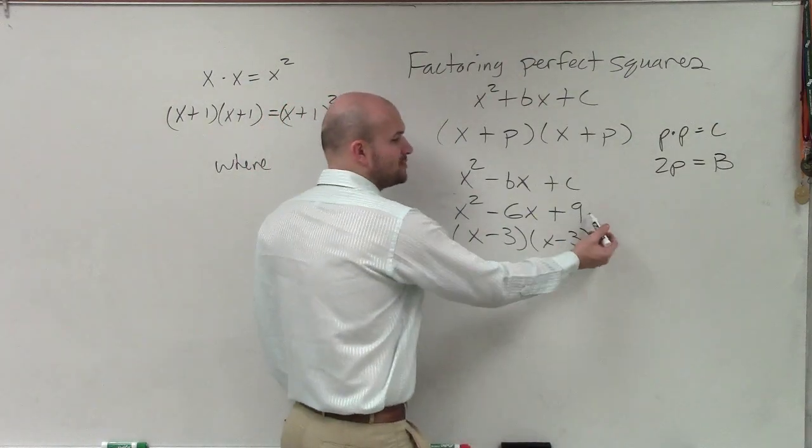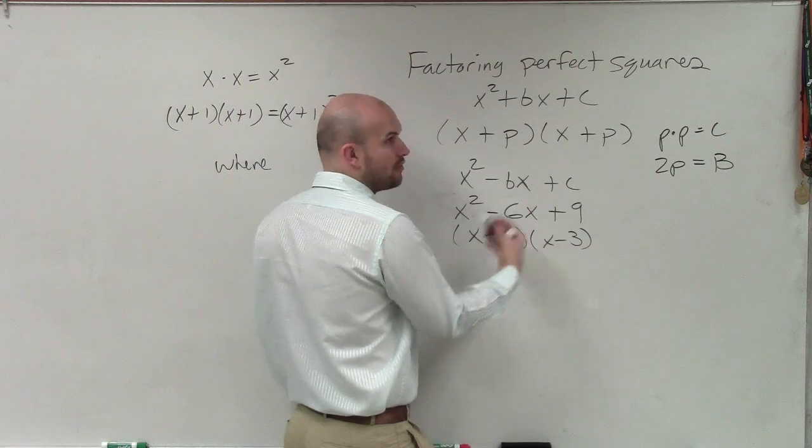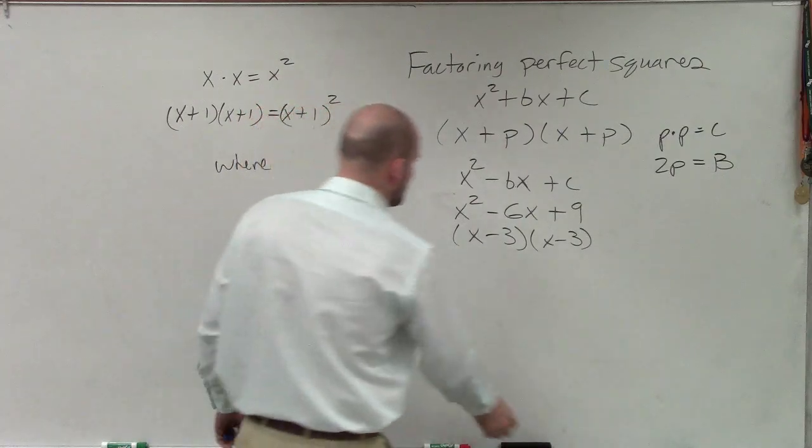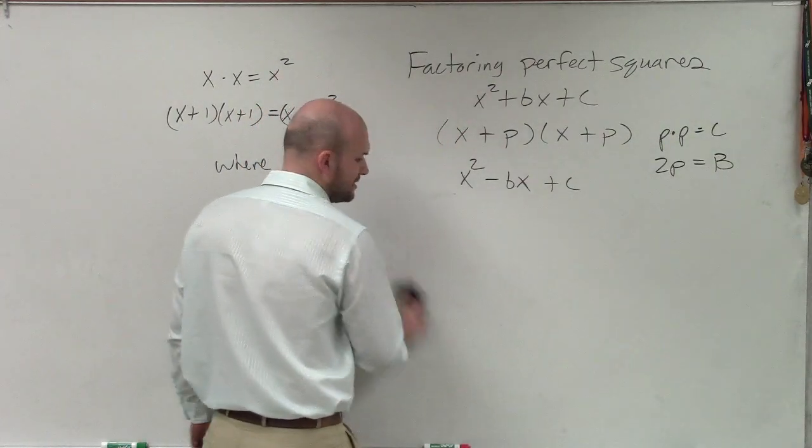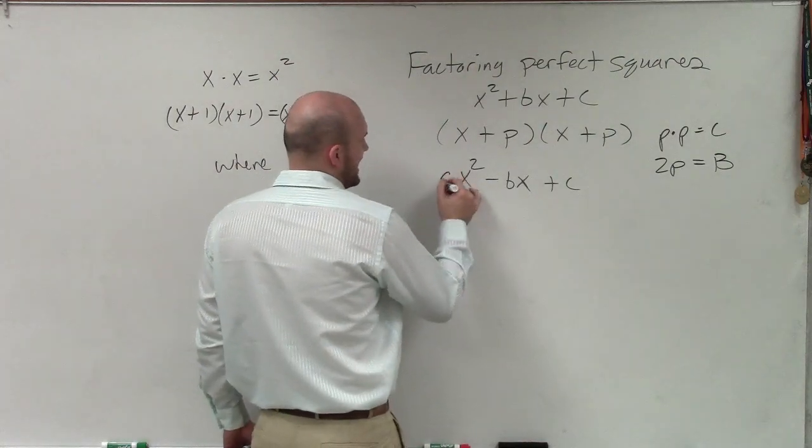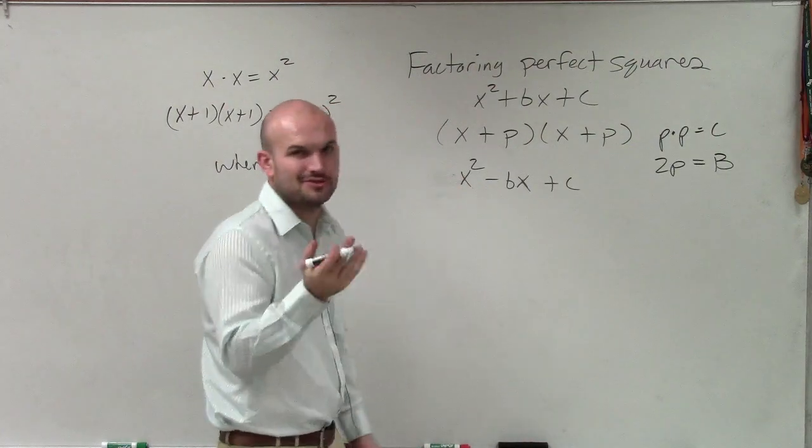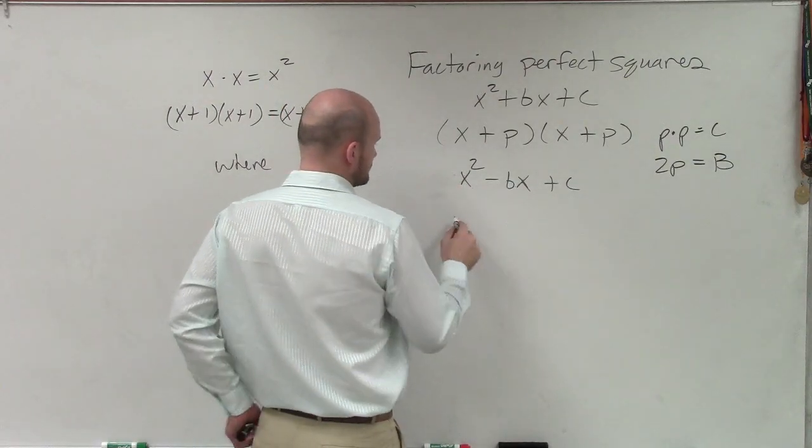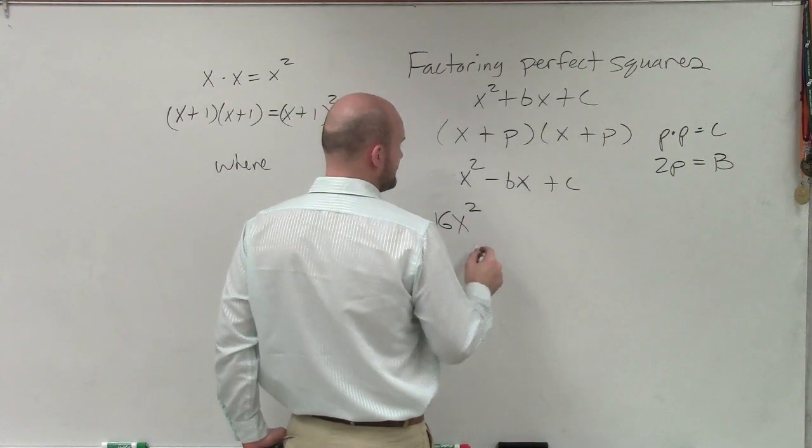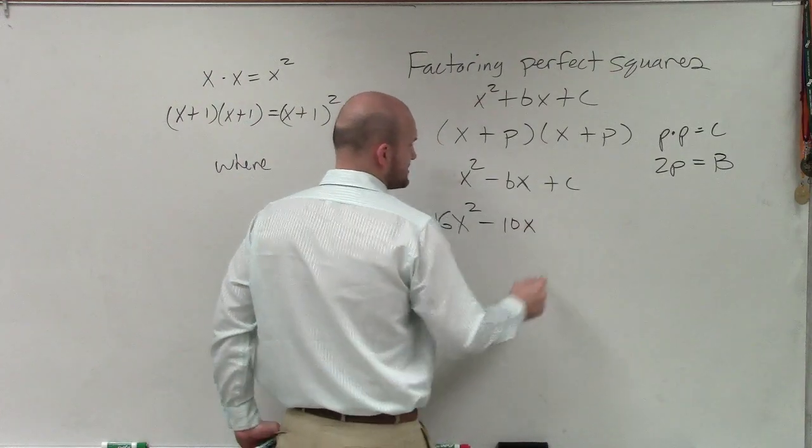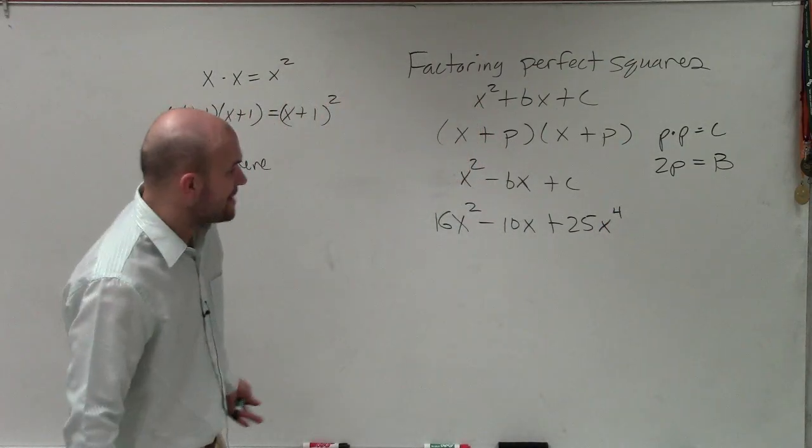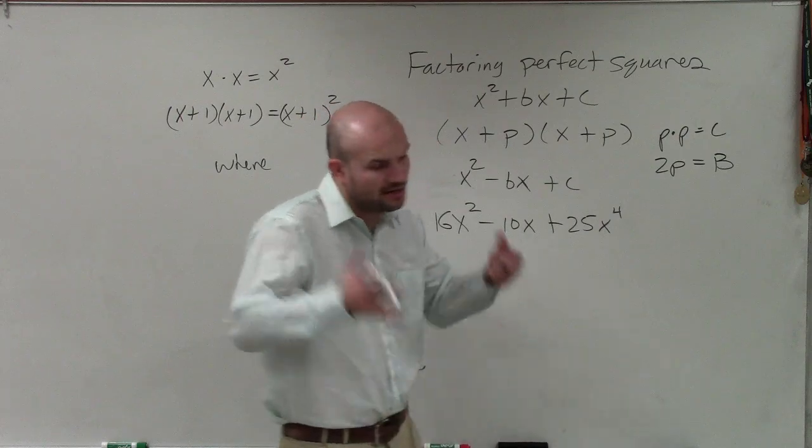So just remember, these two terms have to multiply to give you your last term, and add up together, or just multiply one of them by 2 to give you your middle term. Now, the last thing I'll just kind of go through is, what if I had an extra term? As I talked about before, let's say I had an a, or let's say I do a coefficient. So let's do one more. Let's say I have 16x squared minus 10x plus 25x to the 4th.